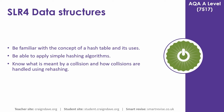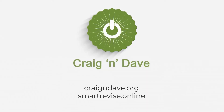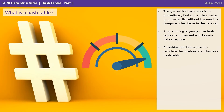In this video, we take a look at the data structure hash tables. So what is a hash table? The goal of a hash table is to immediately find an item in a sorted or unsorted list without the need to compare other items in the data set. Programming languages use hash tables to implement a dictionary data structure. A hashing function is used to calculate the position of an item in a hash table.